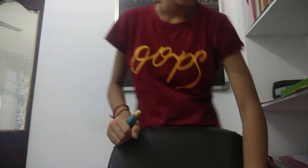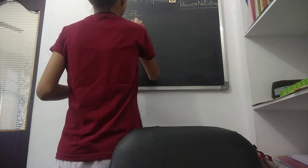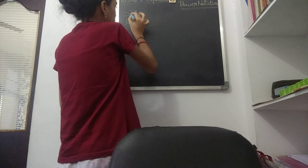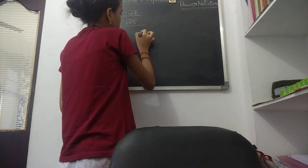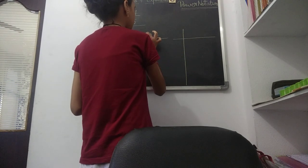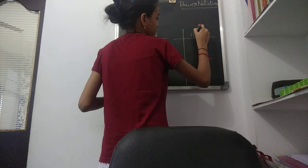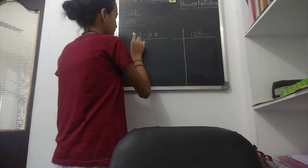For better understanding, I will explain another sum. This one has numerator as 27 and denominator as 125, and this is a negative number — a negative fraction. Here, first we have to take the LCM separately for both numbers — this is for minus 27, and this is for 125.